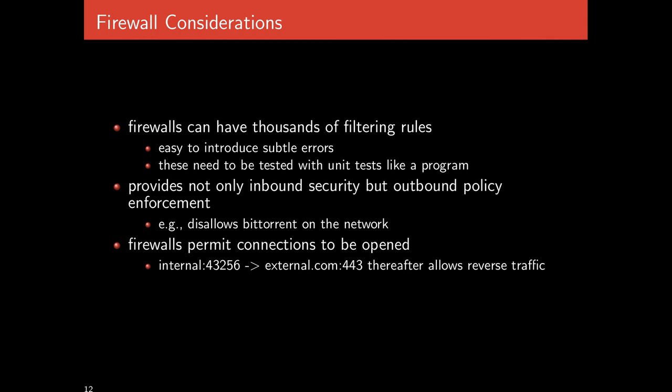Firewalls can have thousands of filtering rules, creating a huge amount of complexity and making it easy to introduce subtle errors. When adding a rule, you not only need to get the rule right but also position it correctly so it makes the right decision without negatively impacting other services. These need to be tested correctly — unit tests should send example traffic through to ensure new changes don't have a negative impact on decisions that are supposed to be made correctly.